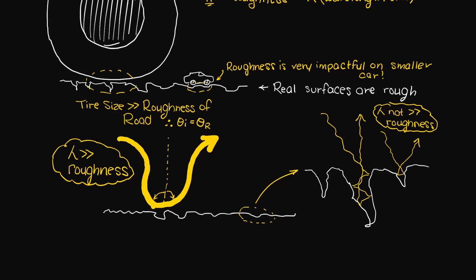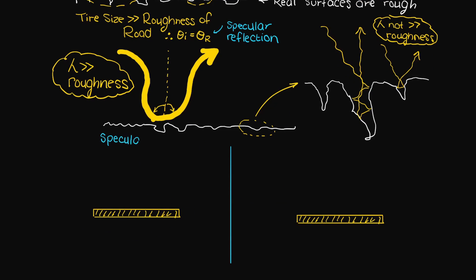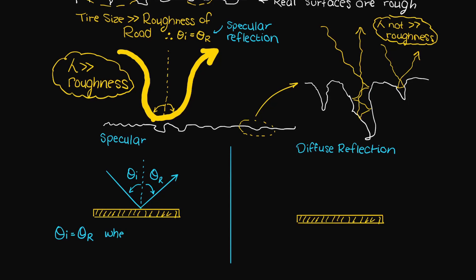So let's say that we have an incoming ray of radiant energy incident on a smooth surface. So our incoming wavelengths are much larger than the roughness of our body's material.